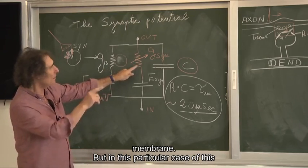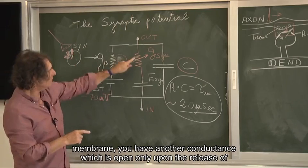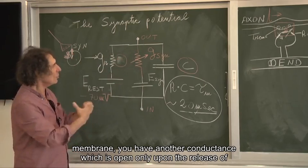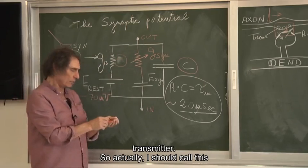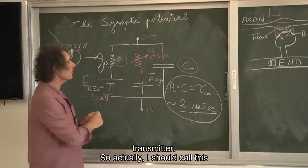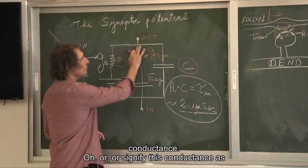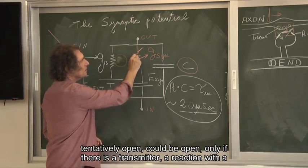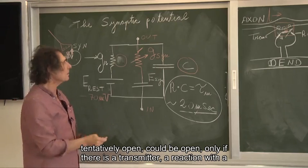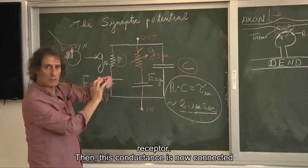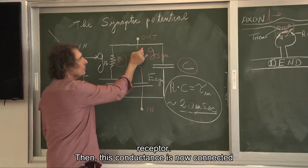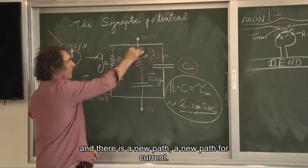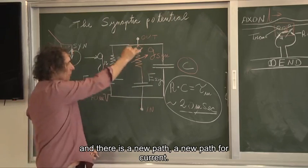But in this particular case of this membrane, you have another conductance, which is open only upon the release of transmitter. So actually, I should call this conductance or signify this conductance as tentatively open, could be open, only if there is a transmitter reaction with the receptor. Then this conductance is now connected, and there is a new path, a new path for current.